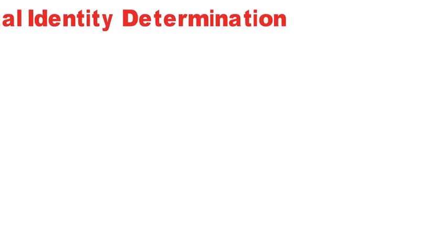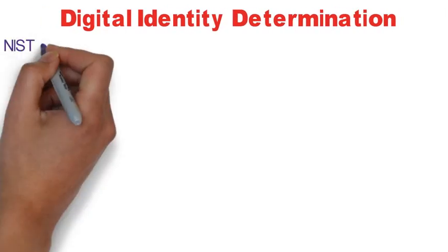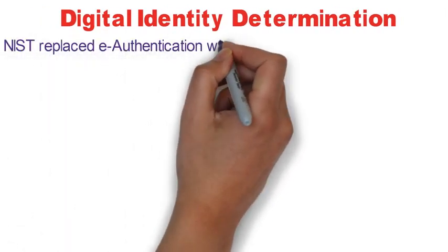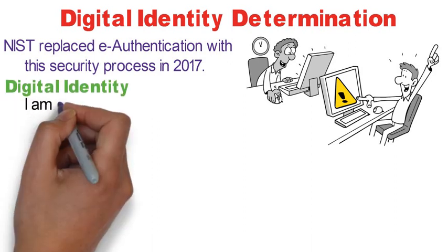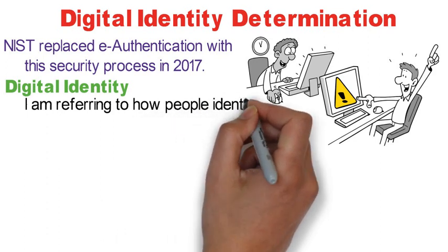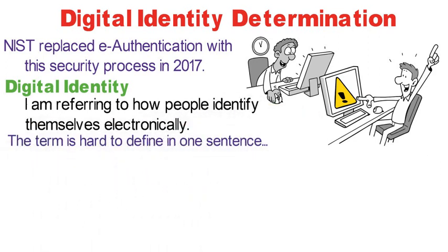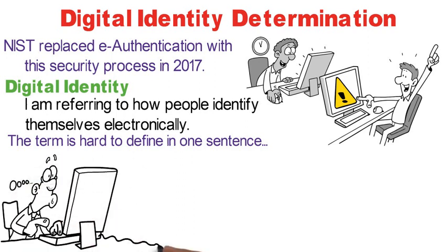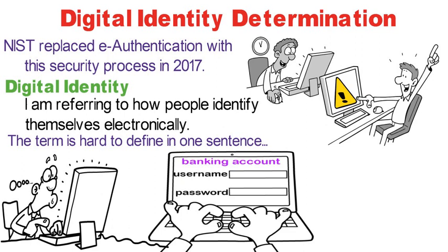I'm going to need to interrupt our simulation just for a little bit to tell you about digital identity determination. NIST replaced e-authentication with this security process in 2017. It provides guidance for network systems to determine the level of security placed on a user's digital identity. By digital identity, I am referring to how people identify themselves electronically — think of it as your online persona, like your username to access your online banking account.